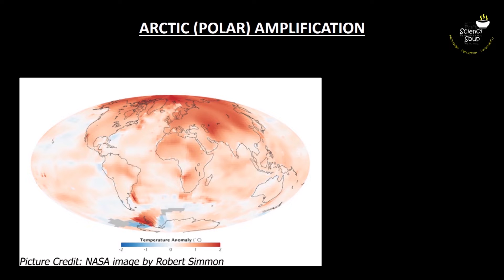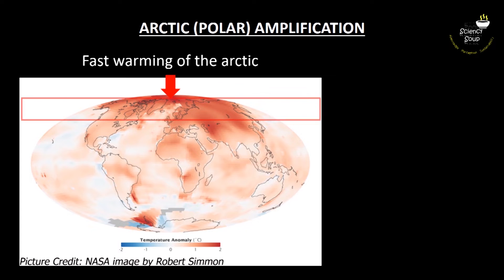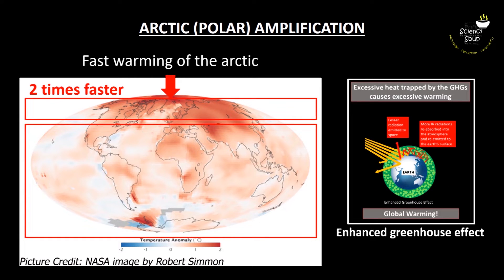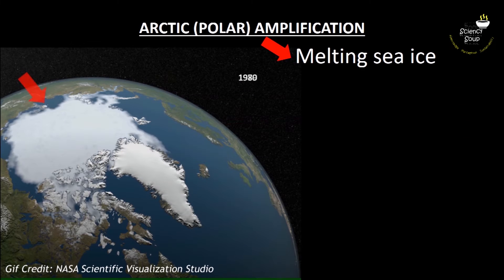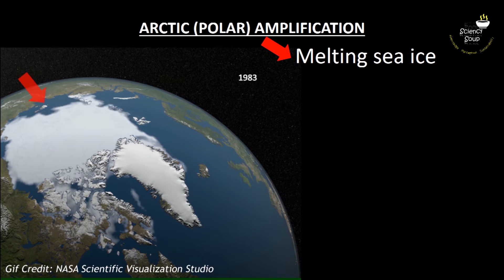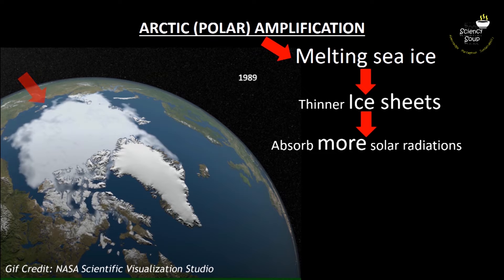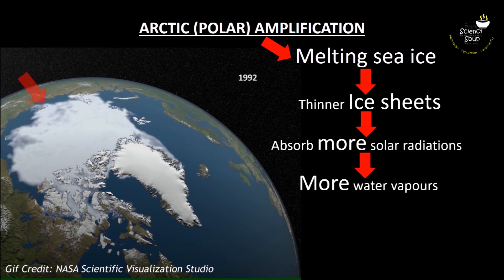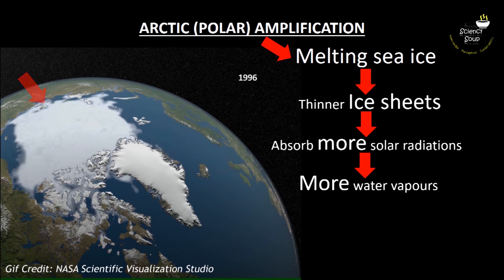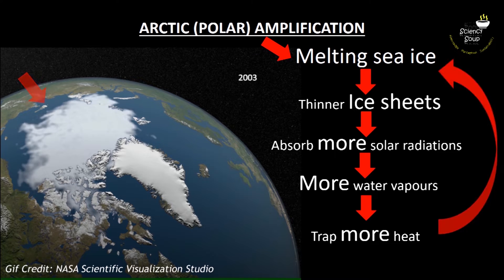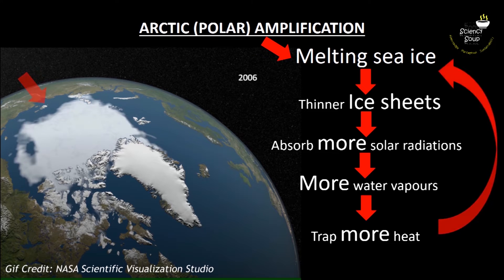Arctic amplification, also known as polar amplification, refers to the faster warming of the Arctic. Studies suggest that temperatures in the Arctic are rising at a rate twice as fast as the rest of the world. This is because of the enhanced greenhouse gas effect. The unusual warming of the Arctic is causing sea ice to melt at an unusually fast rate. Thinner ice sheets absorb more solar radiation, resulting in more water vapors in the atmosphere. As water vapor is a greenhouse gas, it traps more and more heat — thus the fast melting of sea ice is being further accelerated by a feedback loop.